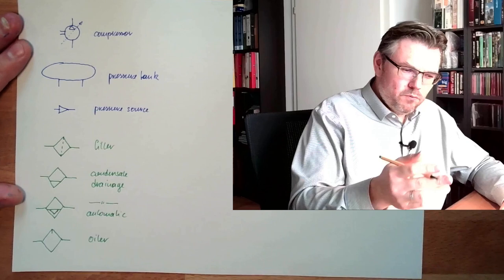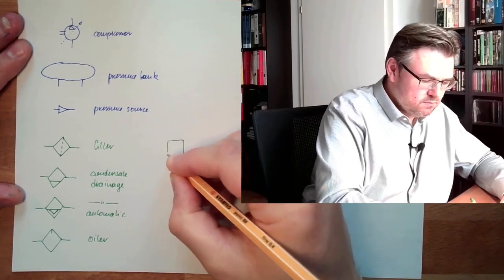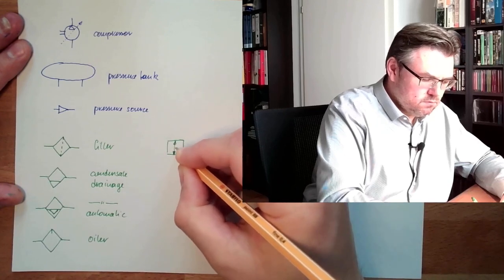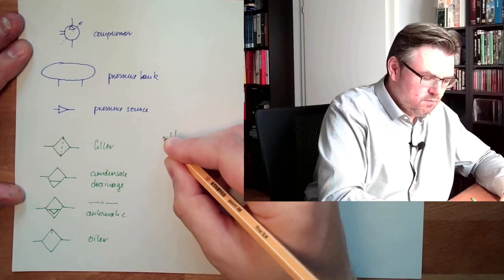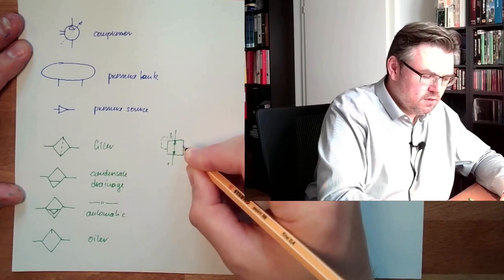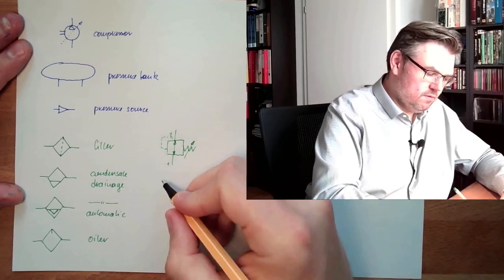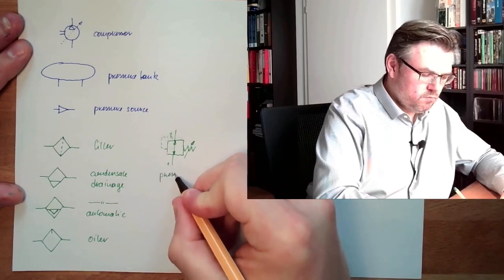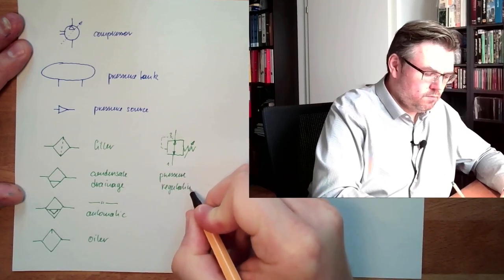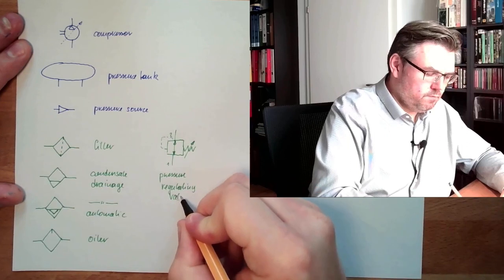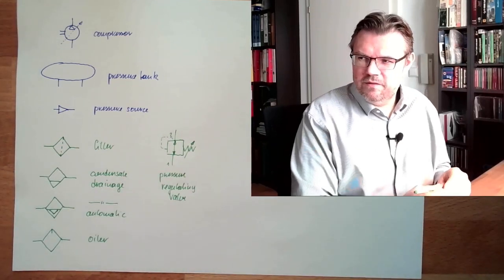Then we talked about this pressure regulating valve. One side, two side. Two side pressure is measured. Counterpart spring. Just a pressure regulating valve. So this is usually in the treatment area.